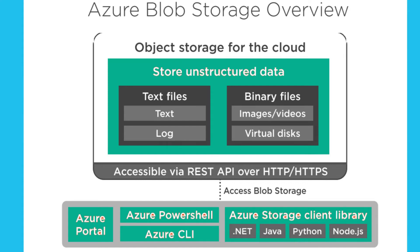In blob storage you can store unstructured data like text files and binary files. You can store files like HTML, JSON, log files, images, videos, ZIP files, PDF files, and many more. You can also store virtual disks for virtual machines.